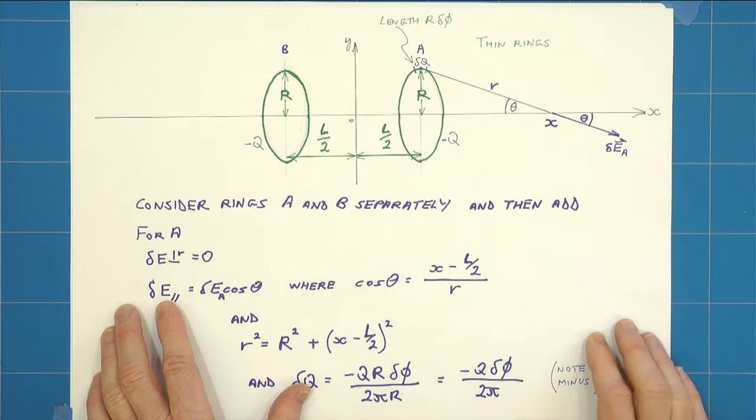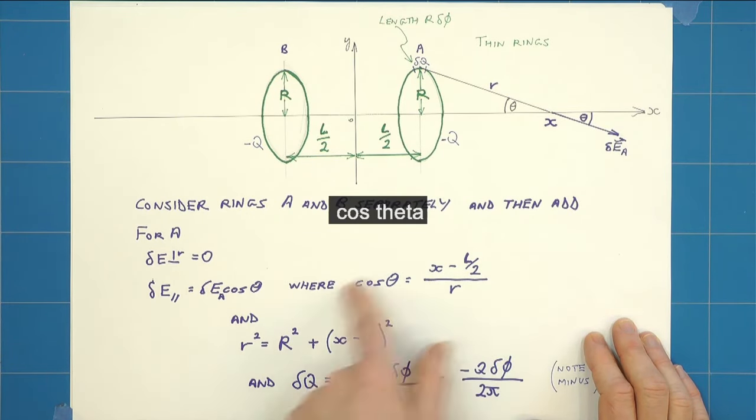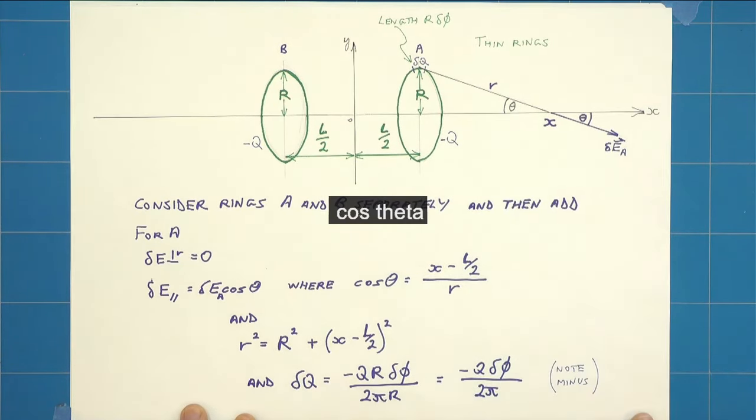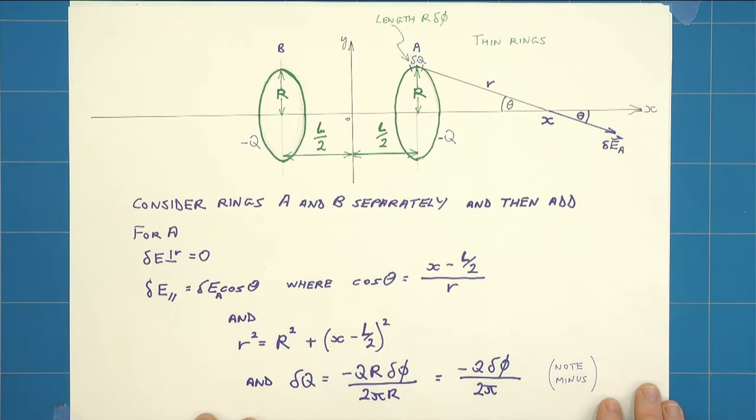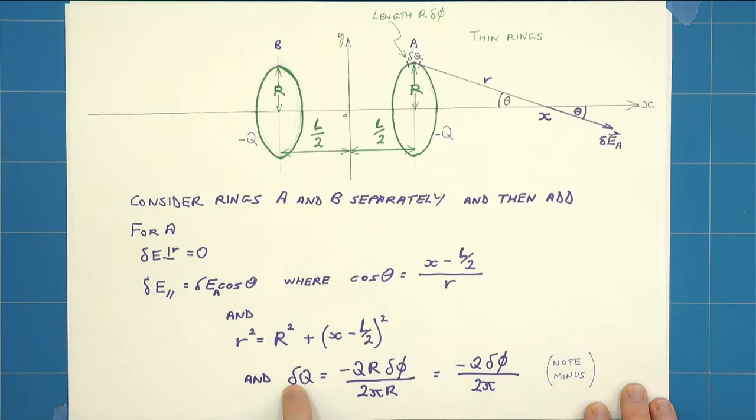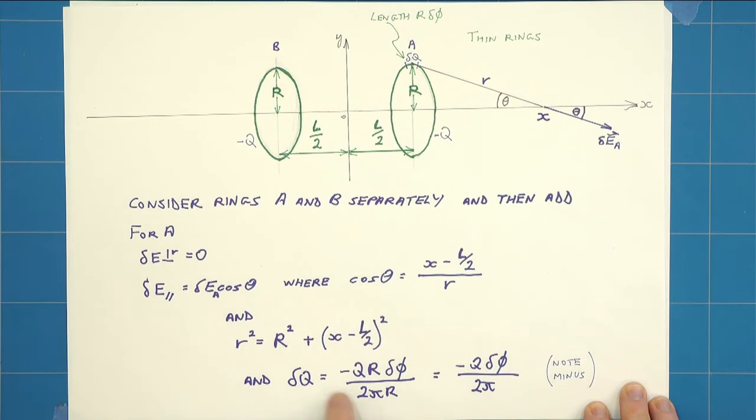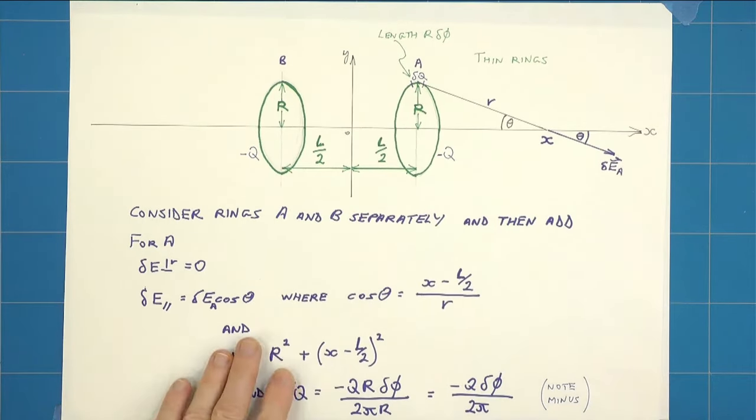Put all that together, we see that along the x-axis the delta E parallel, as I've called it, to the x is delta E cos phi, where cos phi equals this from that triangle. Similarly we know what our r squared is, Pythagoras. And we also know delta q, as I've explained, is minus q r delta phi over 2 pi r, which becomes that. Do note the minus sign because it's negative charge.